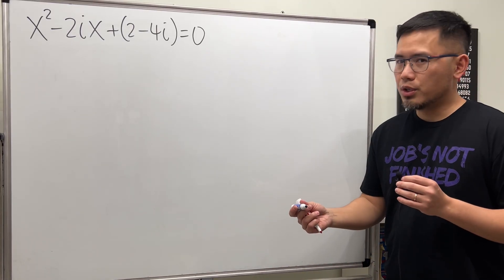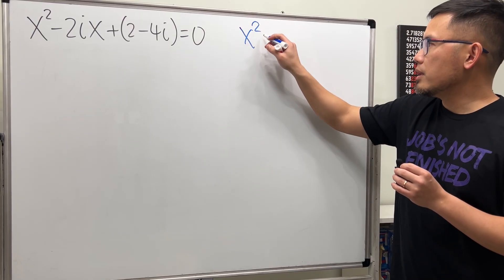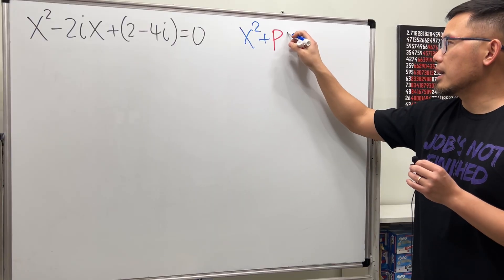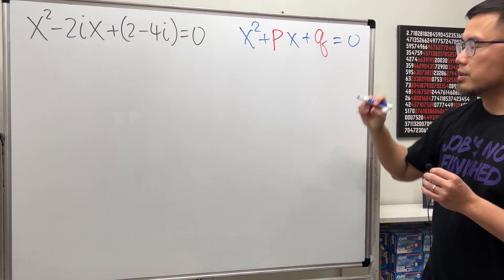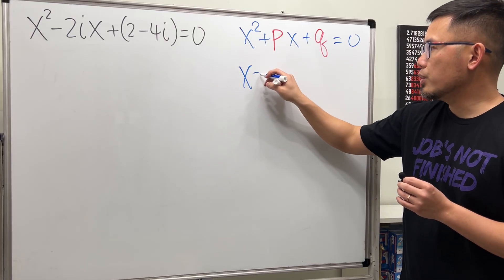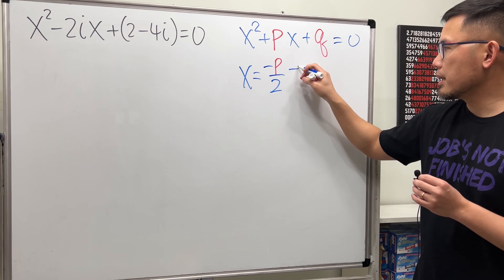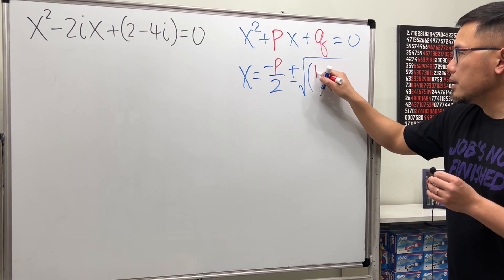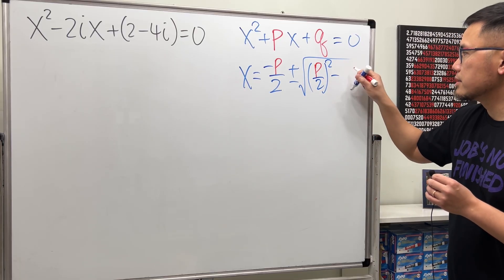Let's review the PQ formula real quick. It says if we have x squared plus some coefficient p times x, plus q, and that is equal to 0, then x is equal to negative p over 2, plus or minus the square root of p over 2 squared, minus q.